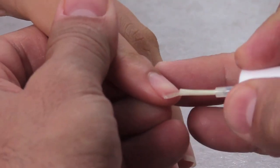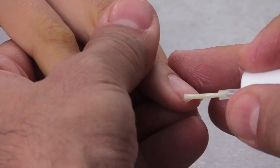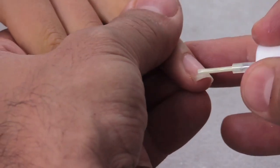When applying protein bond, you only want to apply a thin amount at the free edge of the nail. This is going to prevent the product from chipping.